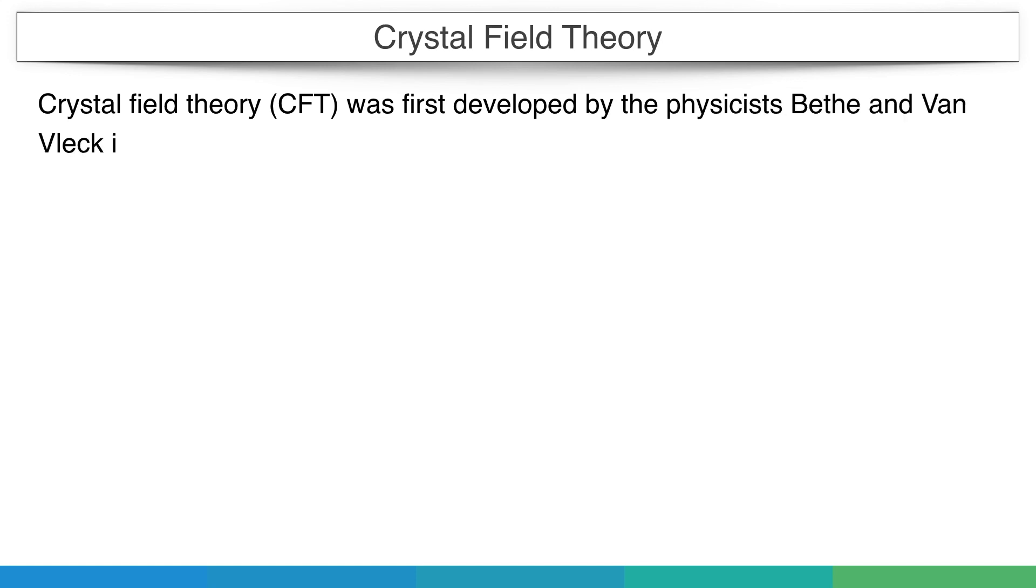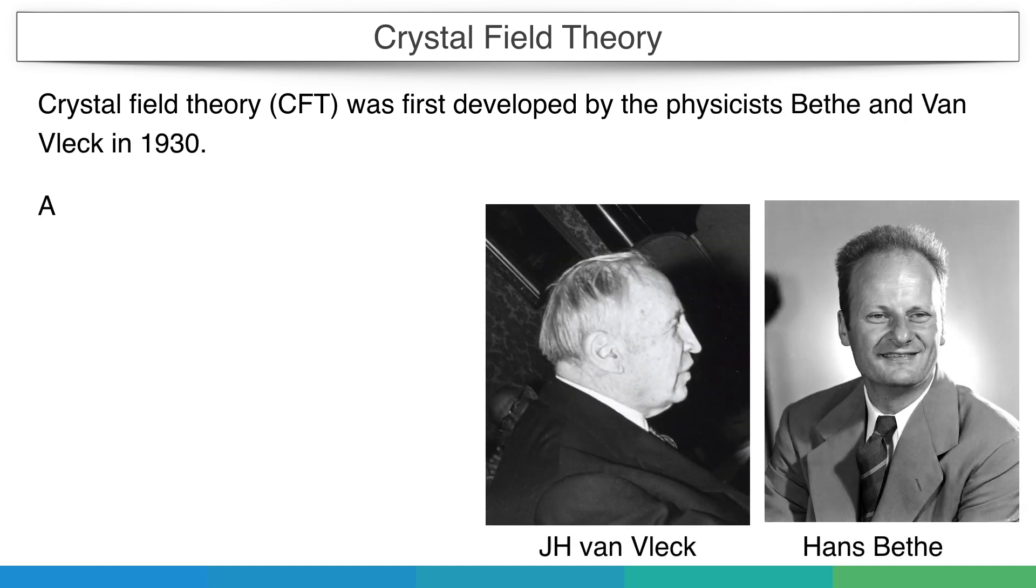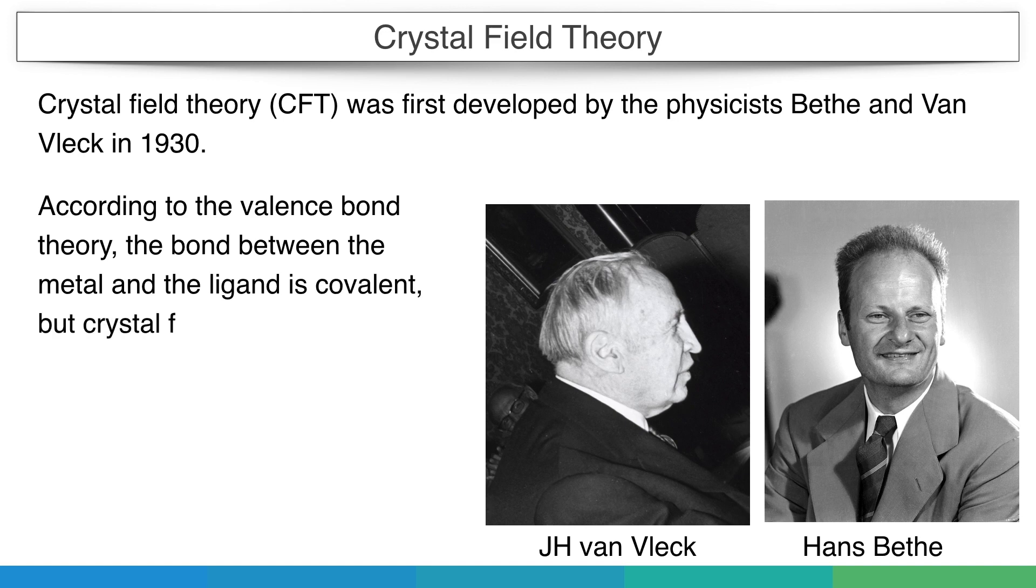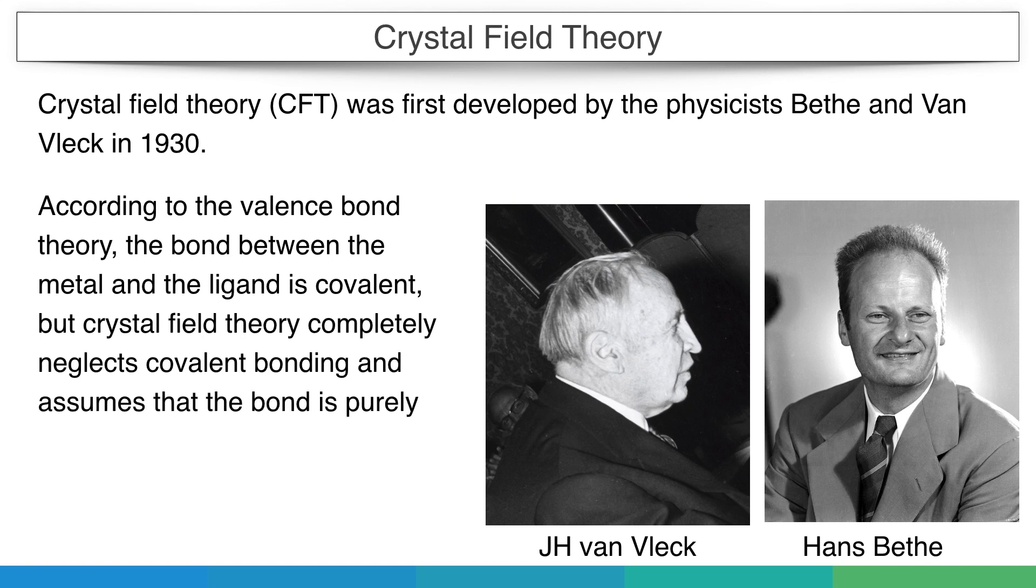Crystal Field Theory was first developed by physicists Beth and Van Valvick in 1930. According to valence bond theory, the bond between the metal and ligand is covalent. But Crystal Field Theory completely neglects covalent bonding and assumes that the bond is purely electrostatic or ionic.